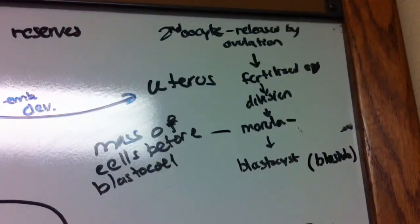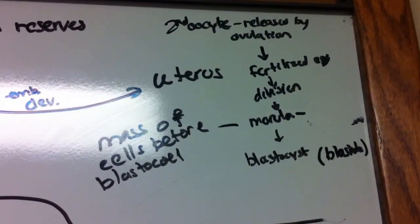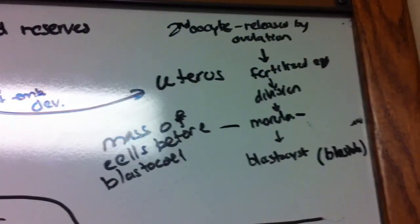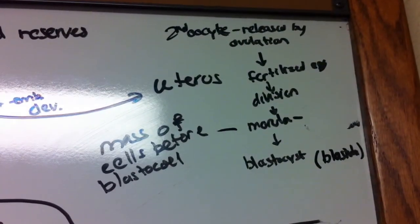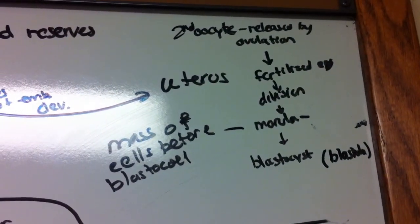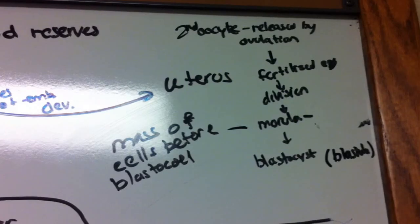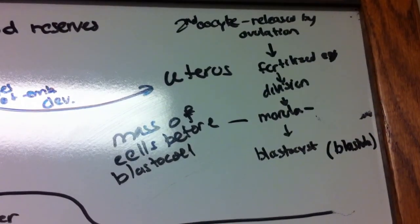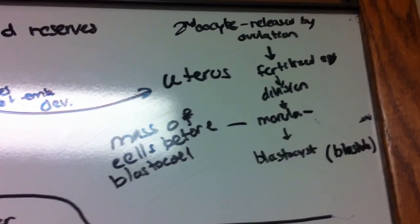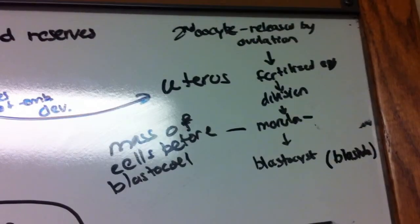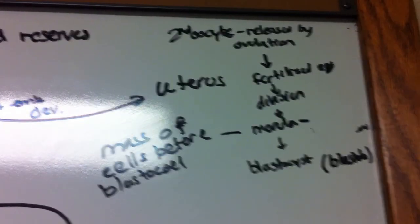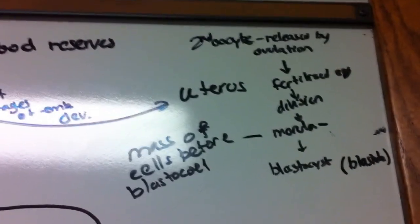Some review before we begin. The second oocyte is what's released by ovulation. Once fertilization begins, we have our fertilized egg, which will then undergo cell division. In this case, cleavage. After cell division, it becomes a morula, which is a mass of cells before we form our blastocele. Once we form our blastocele, we have our blastocyst. A blastocyst is the mammalian version of a blastula.